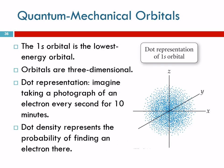So these orbitals have different shapes, and this has to do with the wave functions that describe them. The 1s orbital is the lowest because n equals 1. It's the lowest energy. Orbitals are three-dimensional. They're not flat. And this is a dot representation.